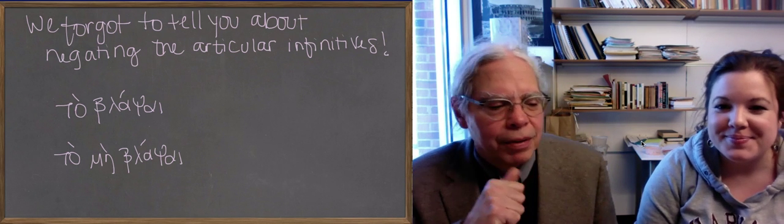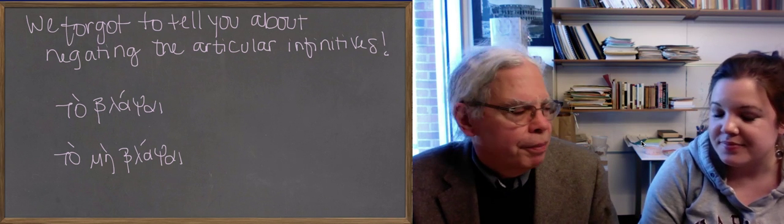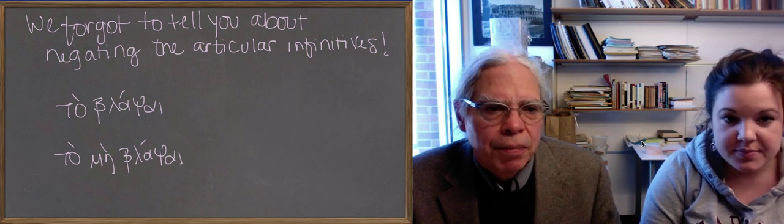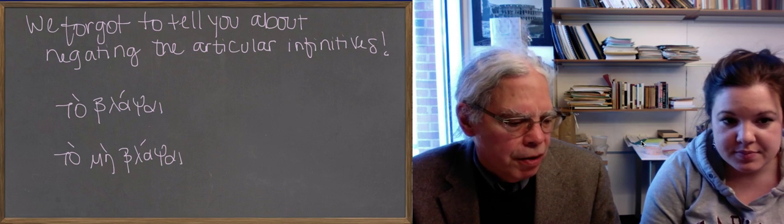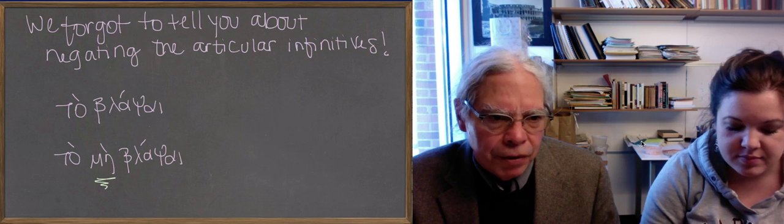But before we do that, there's something we forgot in our video about the articular infinitive, about the gerund. We forgot to tell you how to negate them. And the negative of a gerund is not οὐ, but μή. So τὸ βλάψαι, for example, that's the aorist infinitive of the verb.